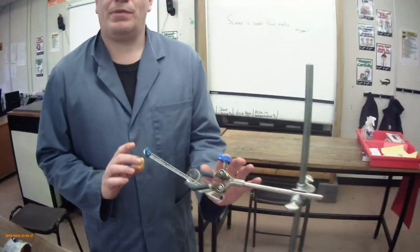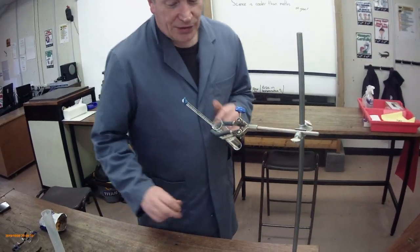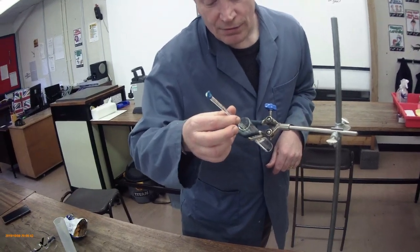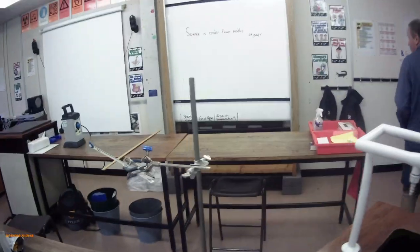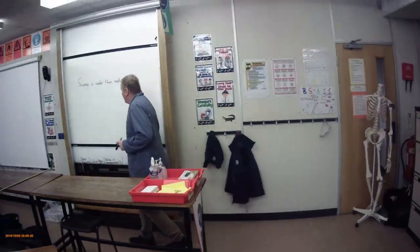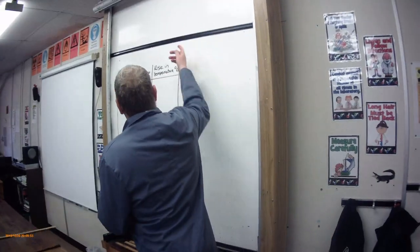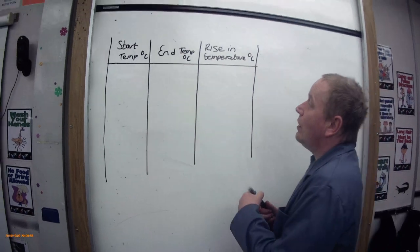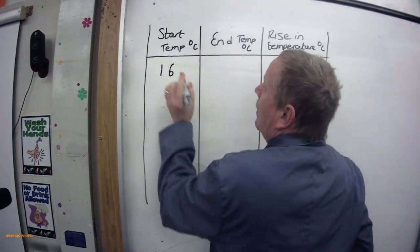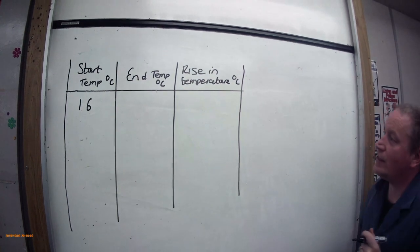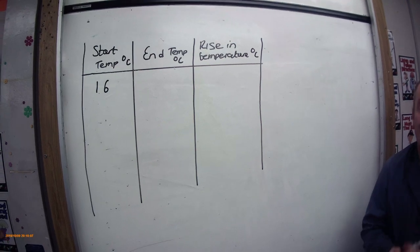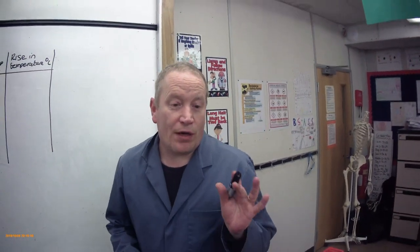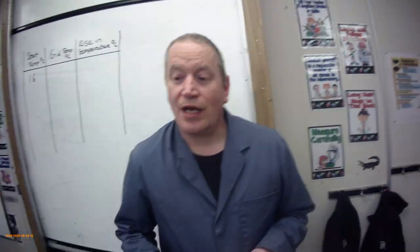I'm just going to pop that into there and leave it for a few seconds so it stabilizes, and then we can read the start temperature off. So, one crisp, 20 milliliters of water, and a temperature at the start of 16 degrees C. So the first time we do the experiment our starting temperature was 16.